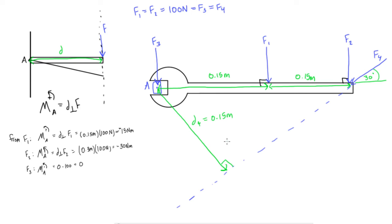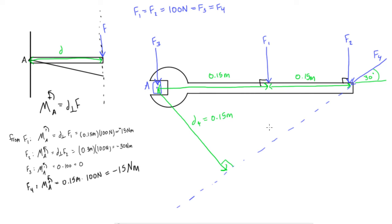To find the moment that F4 is creating, we multiply D4 times the magnitude of the force. From F4, the moment about A equals 0.15 meters times 100 newtons, which also gives us negative 15 newton meters. Again, the negative sign is because it's causing clockwise rotation — you can see that pushing on this one is going to want to make this thing rotate around clockwise.